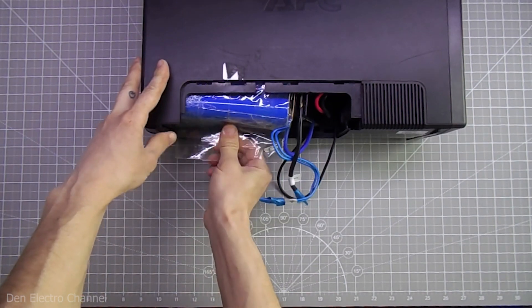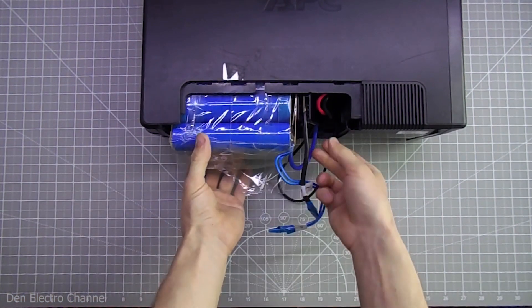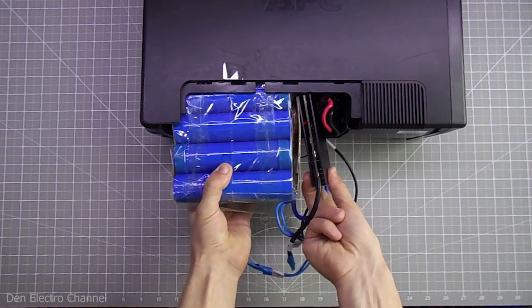Everything will be pulled out exactly the same only in reverse order. The battery will first need to be pulled using special handles that I made from tape, and then the board will need to be pulled out. Before doing this, of course, you must remember to disconnect the connector.